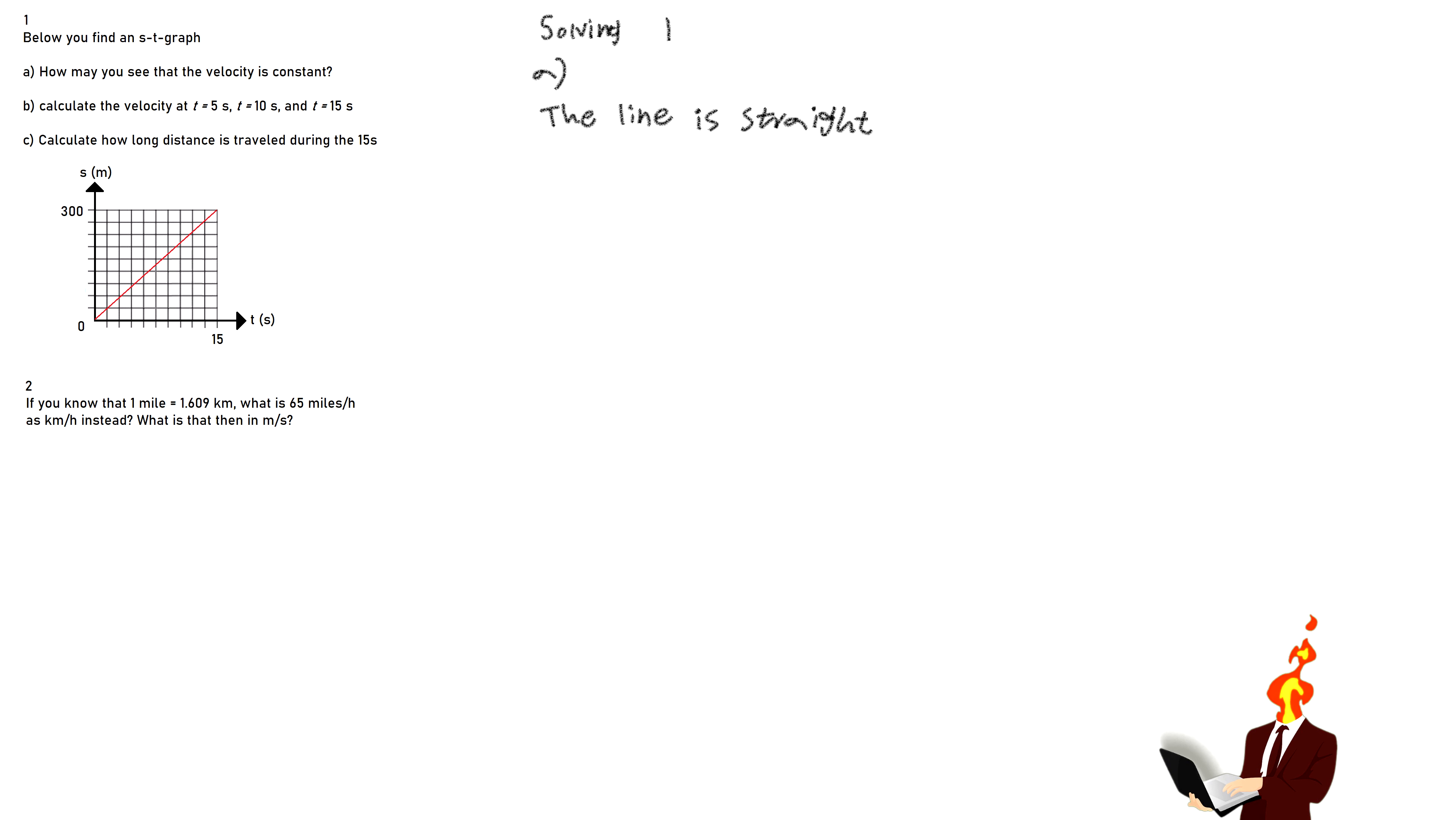Pause and try to figure it out before I tell you the answer. The answer is, the line is straight. When you see a straight line like this, you can tell that the velocity is constant. If the slope ever changes at a certain point, you know that the velocity is not constant.